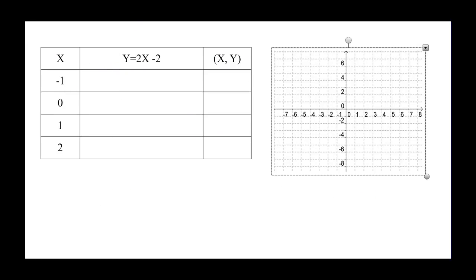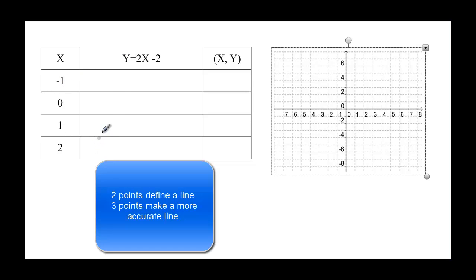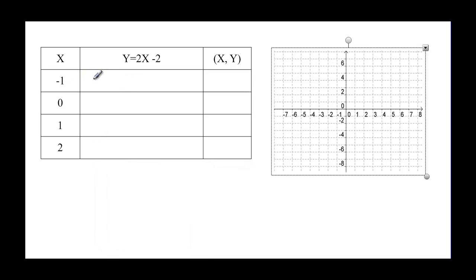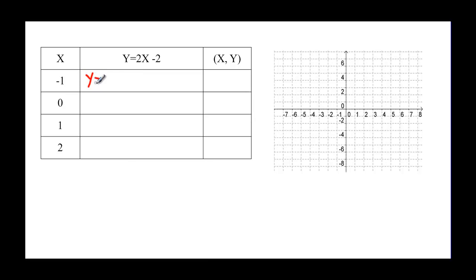Now let's see how to apply this by graphing an equation. You can graph an equation by just picking some points — it takes two points to define a line, and three points makes it even more accurate. For x = -1: y = 2(-1) - 2 = -2 - 2 = -4, so the ordered pair is (-1, -4). For x = 0: y = 2(0) - 2 = -2, giving the ordered pair (0, -2).